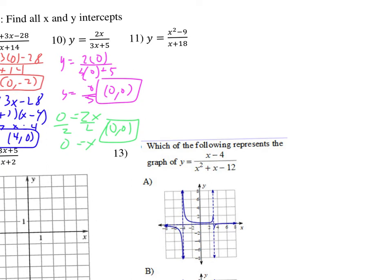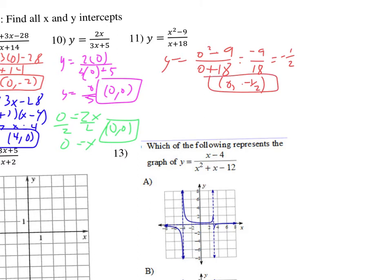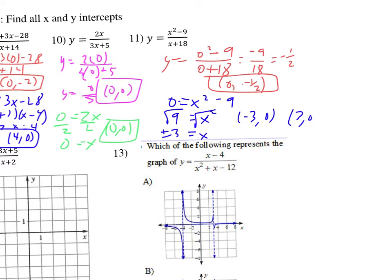Number eleven: y-intercept — plug in 0 for x: 0 squared minus 9 over 0 plus 18 gives negative 9 over 18, which is negative one half. So the y-intercept is (0, negative one half). For the x-intercepts, set the numerator equal to 0: factor as (x plus 3)(x minus 3), or use square roots — remembering plus or minus — giving x-intercepts at (negative 3, 0) and (3, 0).